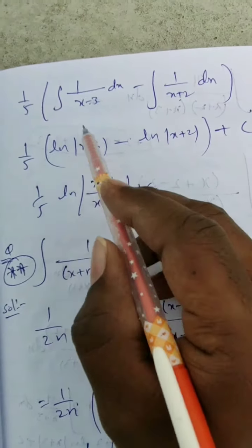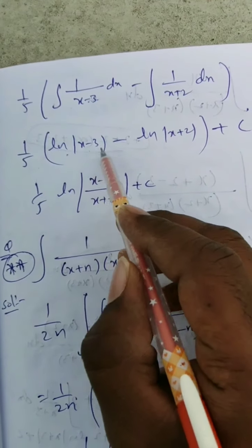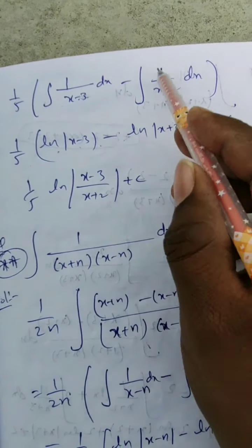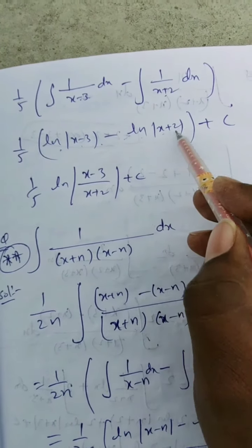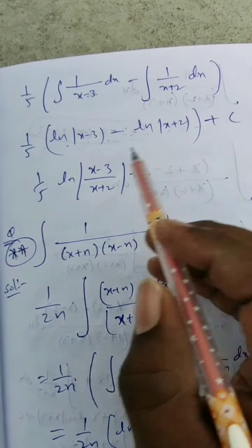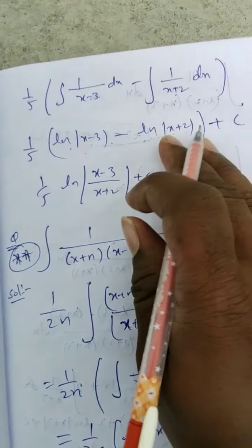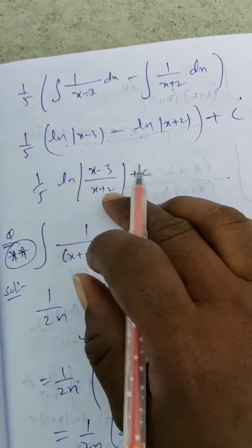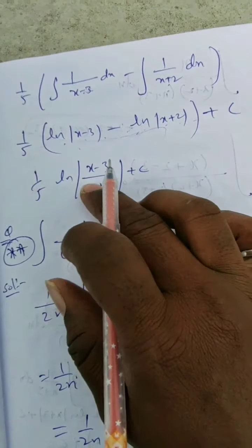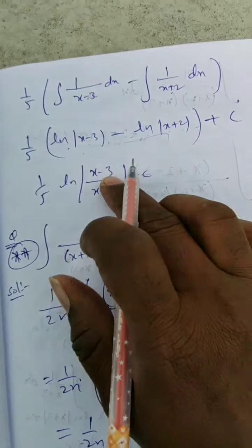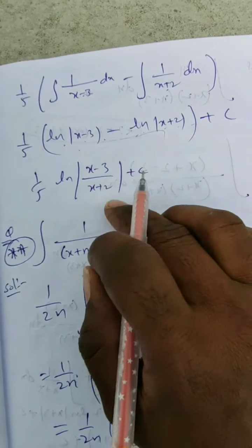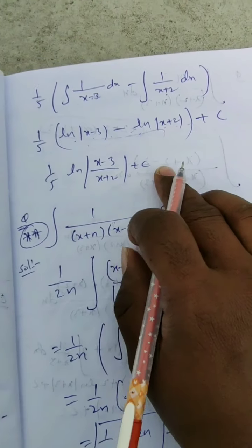So that gives 1 by 5 times ln|x minus 3| minus ln|x plus 2| plus c. Applying log a minus log b formula: ln|x minus 3 by x plus 2| plus c. That is the answer.